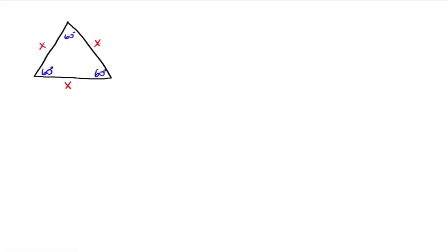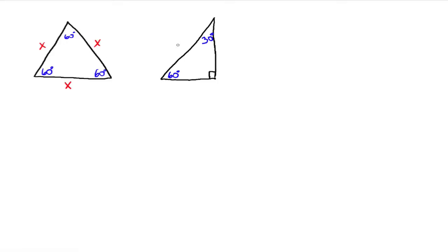Now, what if we take this triangle and bisect one of these angles and cut it in half? By bisecting this angle right here, we're making a right triangle, where this angle is 60 degrees. Since we cut this angle up here in half, this angle right here is 30 degrees. The hypotenuse is still length x, and we've cut the base in half, so this length down here is one half of x.